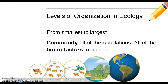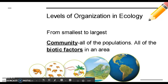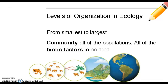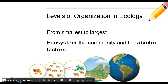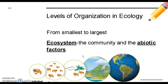Next we have the community. The community is all of the populations in an area — another way of thinking about this is all of the biotic factors in an area. So we have the frogs, but then we add things like plants, worms, bacteria, fungi, and larger animals that all make up the community. Then we have the ecosystem: if we take the biotic community and add in the abiotic factors like climate, water, and sunlight, then we get the ecosystem.